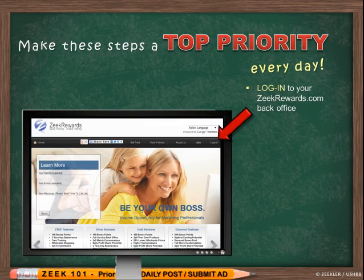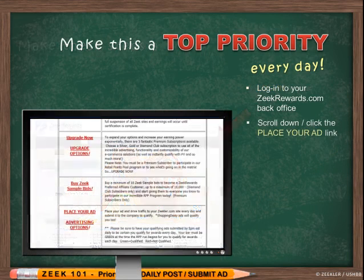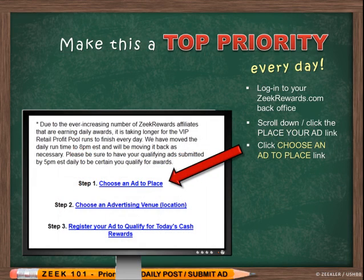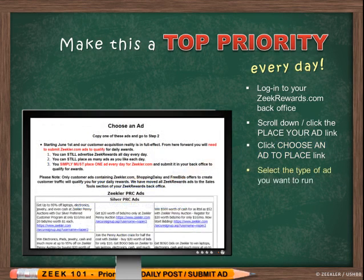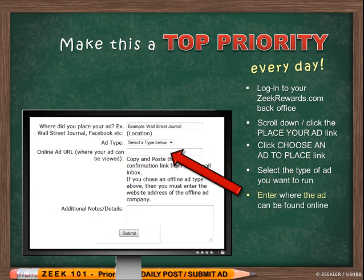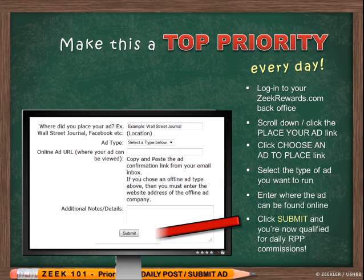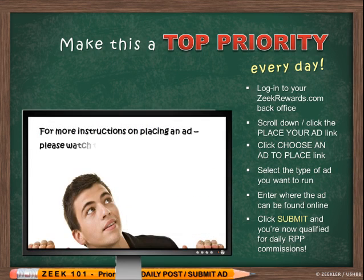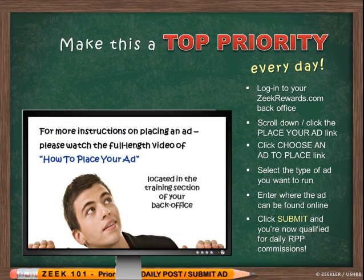First, log on to your ZeekRewards.com back office and scroll down and click on the 'Place Your Ad' link. Then click on the 'Choose an Ad to Place' link, select the type of ad you want to run, then enter where the ad can be found online, and once you click the submit button you're now qualified for daily RPP commissions. For more detailed instructions, please watch the full-length video on how to place your ad located in the training section of your back office.